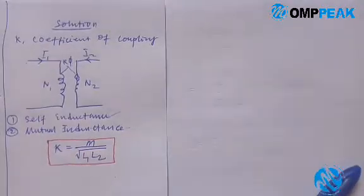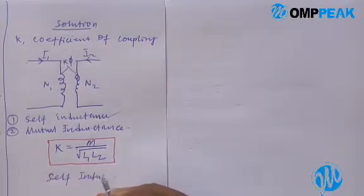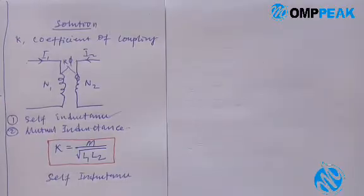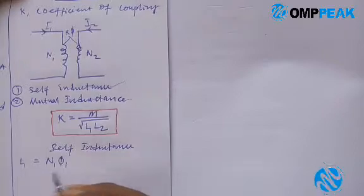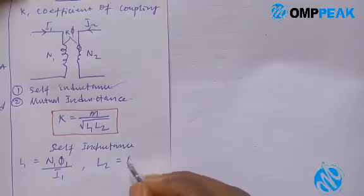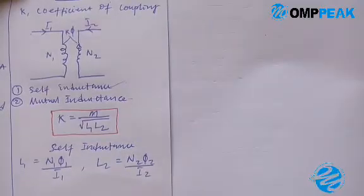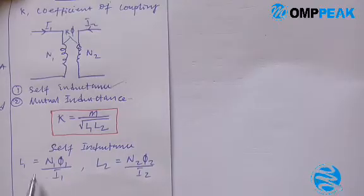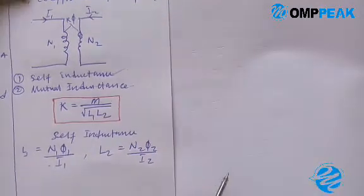Now let's begin with self inductance. Remember that self inductance is L1 equal to N1·φ1 over i1, then L2 equal to N2·φ2 over i2. That is for self inductance: L1 = N1·φ1/i1, then L2 = N2·φ2/i2.